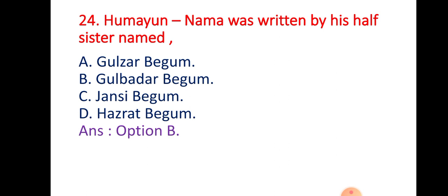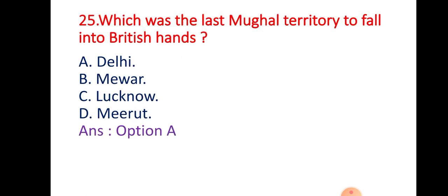Question 24: 'Humayun Nama' was written by Humayun's half-sister named — Option A: Gulshara Begum; Option B: Gulbadan Begum; Option C: Jhansi Begum; Option D: Asrat Begum. The right answer is Option B — Gulbadan Begum, the half-sister of Humayun, wrote his biography 'Humayun Nama.'